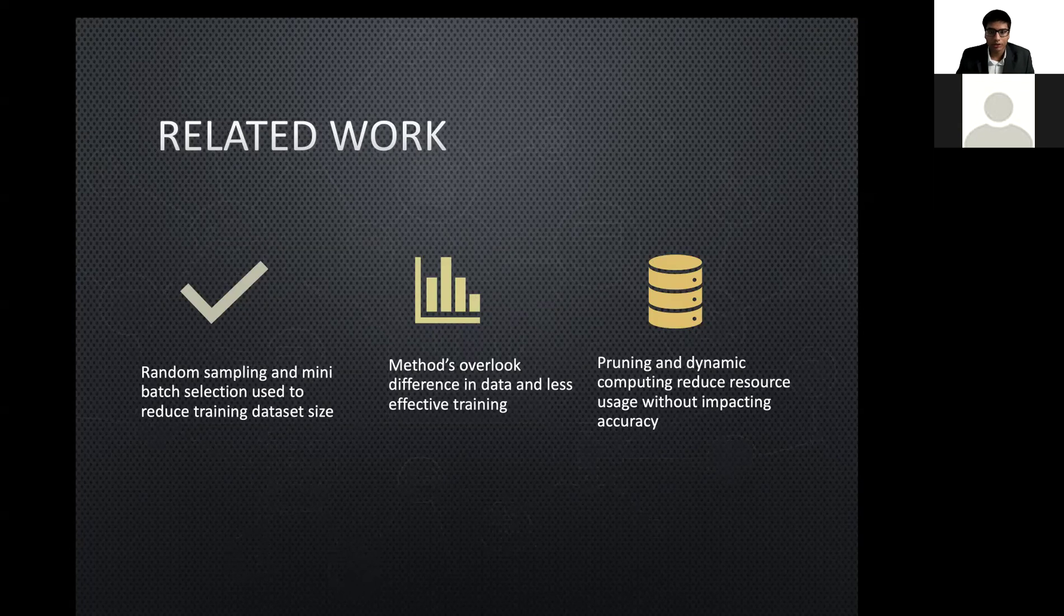Related work. The data sampling techniques such as random sampling and mini batch selection used to decrease dataset size often overlook differences in data, ineffective use of computing resources, and less effective model training. Hayashi et al. discussed optimization techniques like pruning, quantification, and achieved decent reductions in inference time and resource usage with minimal impacts on accuracy. Huang et al. research on selecting representative test data subsets often struggle with complexity and diversity of LLM tasks requiring new approaches.